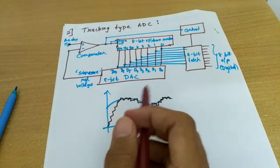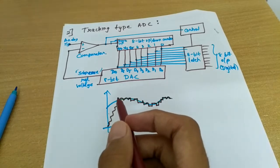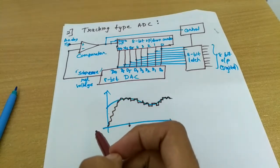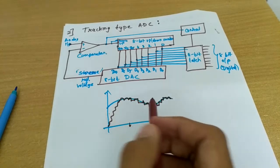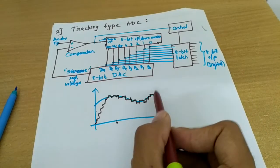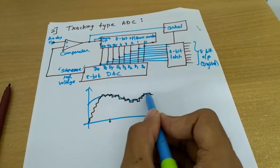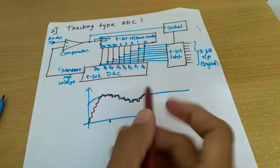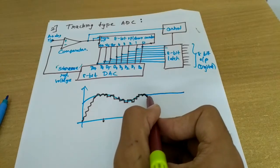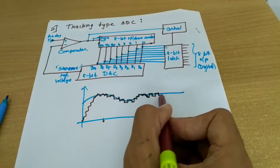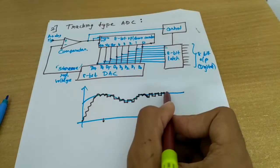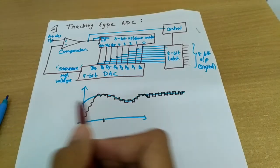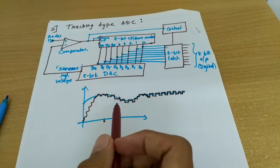The output will follow the analog input and will not reset again and again. Thus we can say it will require very less time compared to counter type ADC. The disadvantage is that when the analog input remains constant for some time, the output is continuously oscillating from high to low, high to low. This oscillation is the major disadvantage of tracking type ADC.